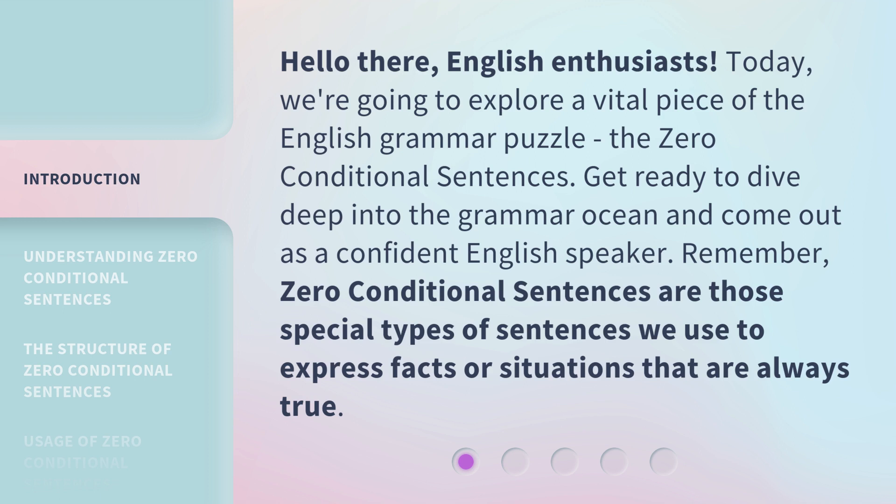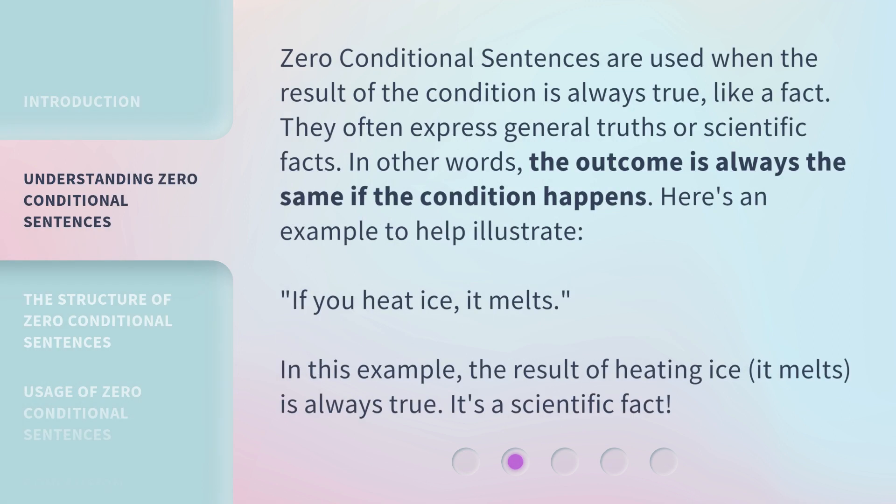Zero conditional sentences are those special types of sentences we use to express facts or situations that are always true. They are used when the result of the condition is always true, like a fact. They often express general truths or scientific facts. In other words, the outcome is always the same if the condition happens.